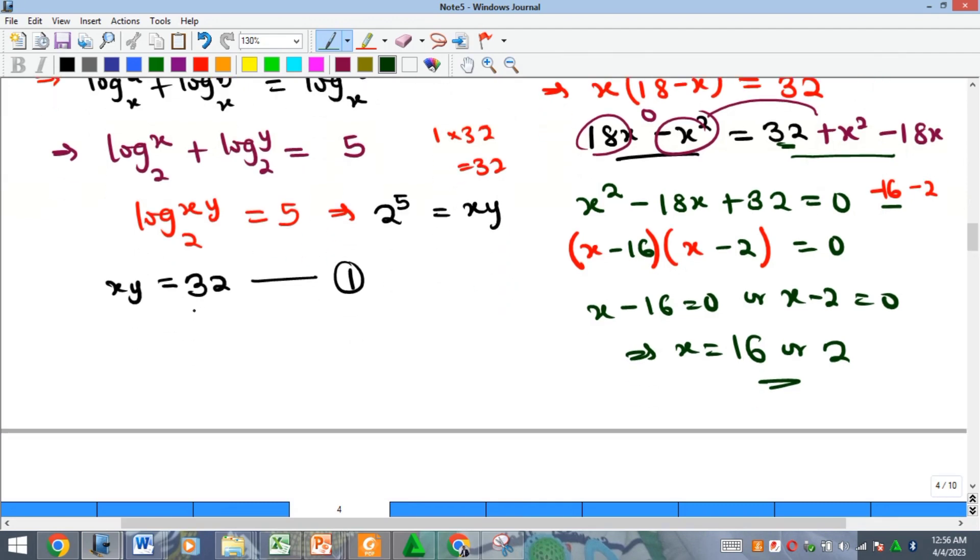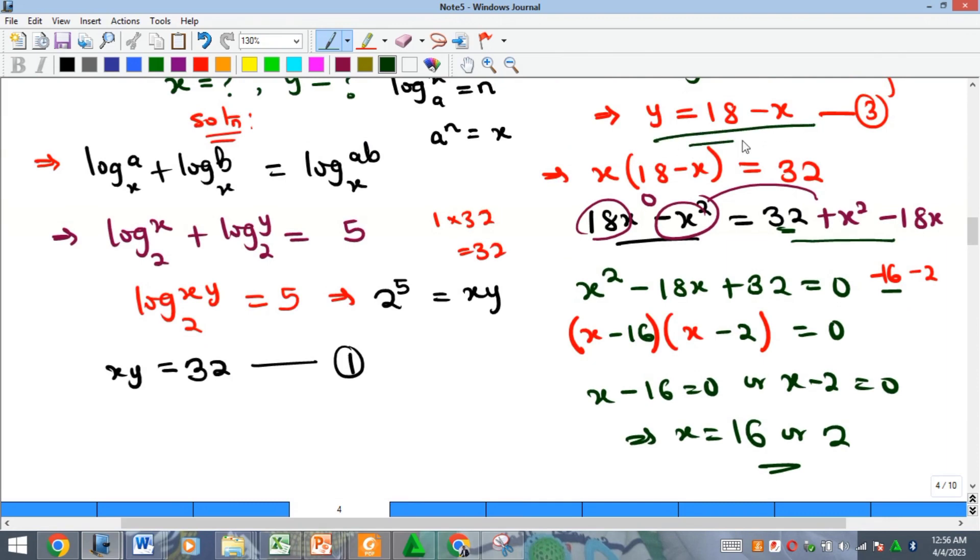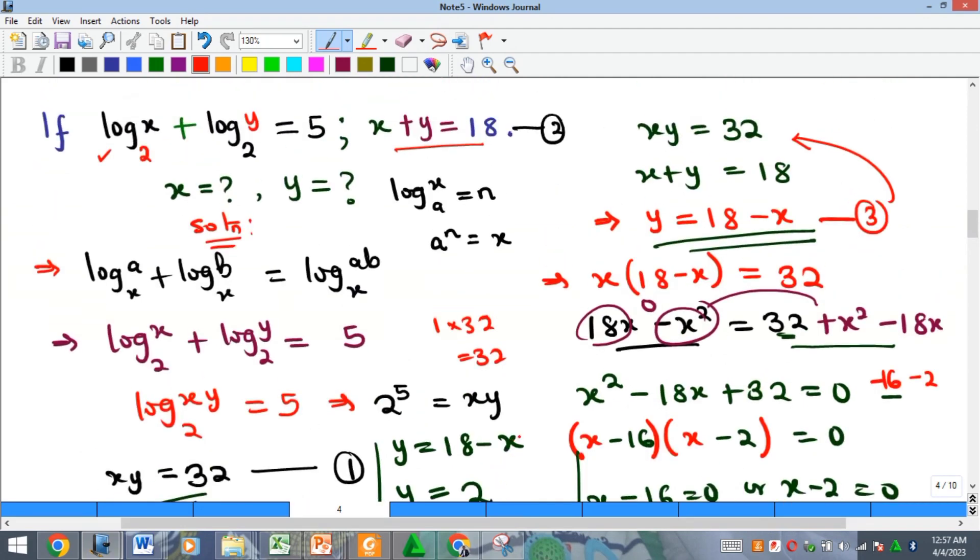We have found our x and we can now solve for y. Using the formula y equals 18 minus x, when my x is 2, my y will be 16, and when my x is 16, my y will be 2. Therefore, x equals 16 or 2, and y correspondingly is 2 or 16. When our x is 16, our y is 2, and when our x is 2, our y is 16. That is the solution to this problem.